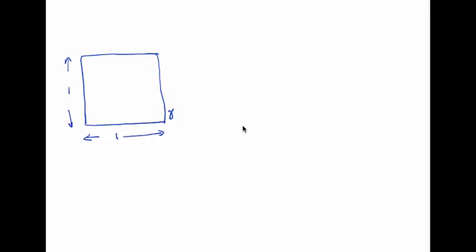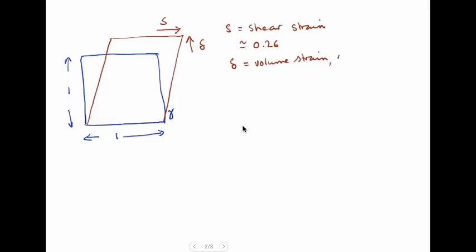When it transforms into martensite, the shape will change as follows. This is the shear strain s, and this is the volume change which is normal to the habit plane. s is the shear strain, typically with a value of about 0.26, and delta is the volume strain normal to the habit plane, of the order of 0.03.